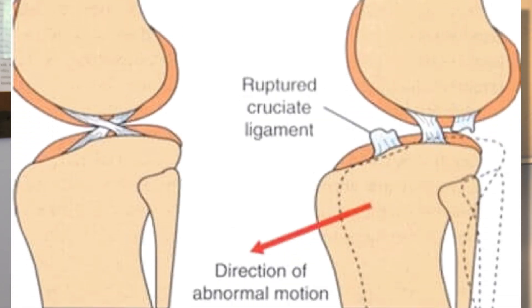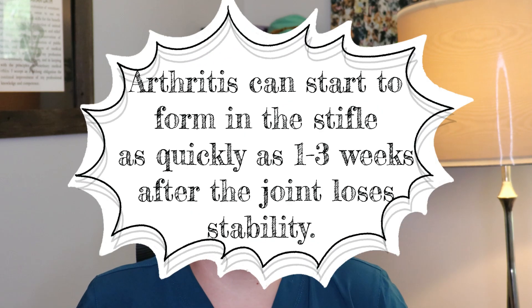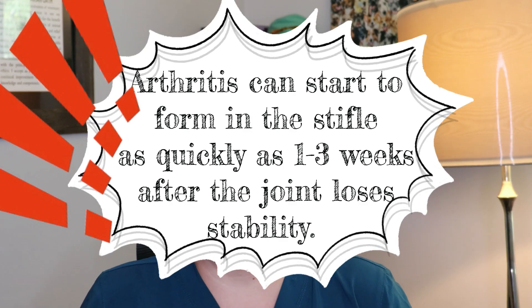Without an intact healthy cruciate ligament the stifle is unstable. This leads to abnormal wear between the bones and with the meniscus in that stifle, degenerative changes within that joint, bone spurs, arthritis, and more pain will develop if it's not addressed. The process of arthritis development will be slowed by surgery that stabilizes the joint, but we cannot reverse it once it's present. In some patients we can see the beginning arthritic changes called osteophytes in as little as one to three weeks.